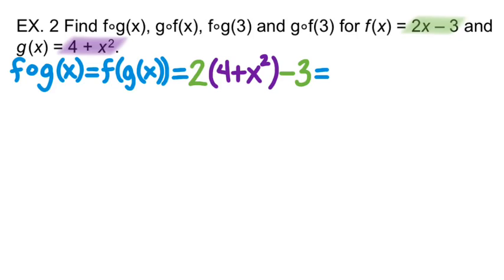So distributing the 2, I'm going to get 8 plus 2X squared minus 3. Then I'm just going to combine like terms and rewrite in a simplified form. So this will be 2X squared plus 5.